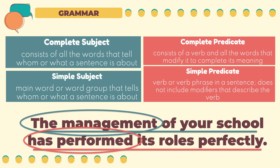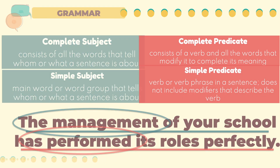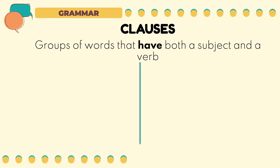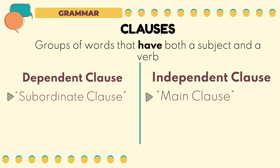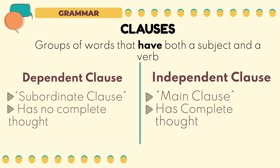We are now done reviewing simple and complete subject and predicate. Let's review the different types of clauses. Clauses are a group of words that have both a subject and a verb or a predicate. There are two major types: the dependent clause and the independent clause. The dependent clause is also called a subordinate clause because it starts with a subordinating conjunction, while the independent clause is called the main clause. A dependent clause does not have a complete thought, while the independent clause has a complete thought. A dependent clause cannot stand alone, but the independent clause can.